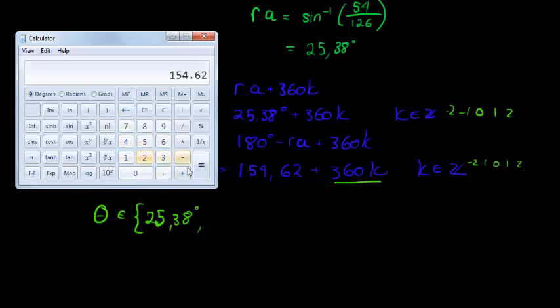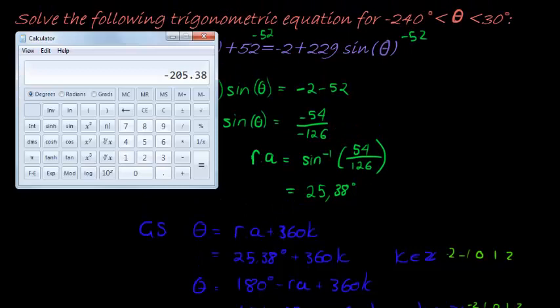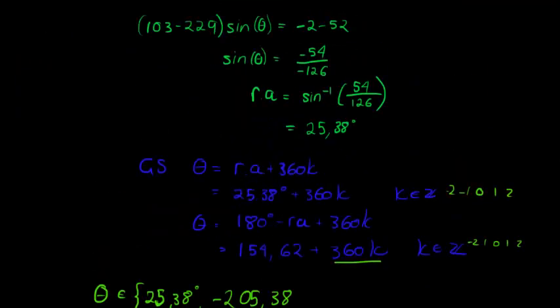154.62 minus 360, negative 205, that's going to work. Negative 205 falls inside there. So negative 205.38, and that's close enough, no more.